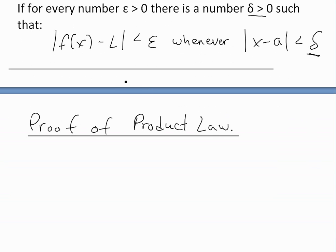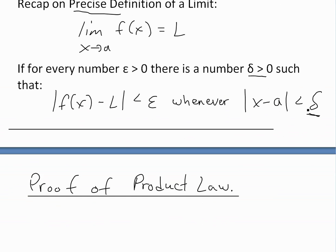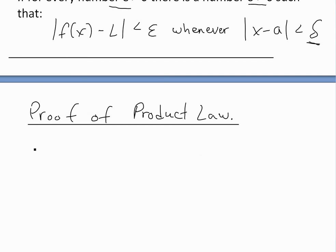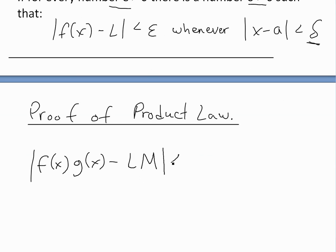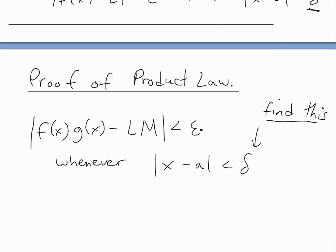Now we'll prove that limit law using this definition. To prove the product law, we basically have to write that product law in terms of the precise definition and find delta. We're given epsilon for every number; we just need to make sure there is a delta greater than zero. So we write: the absolute value of f(x) times g(x) minus L times M must be less than epsilon, whenever the absolute value of x minus a is less than delta.